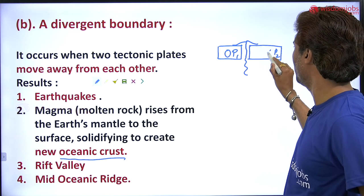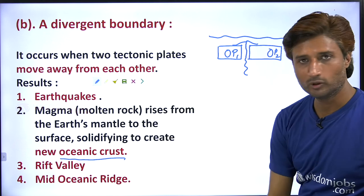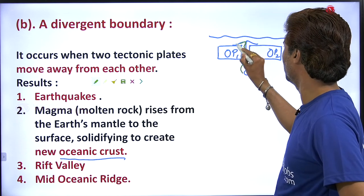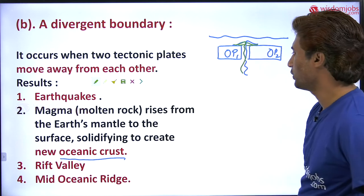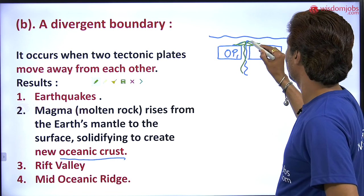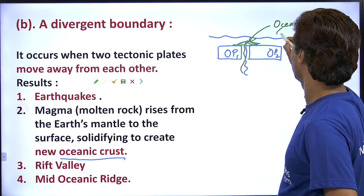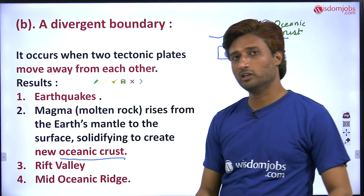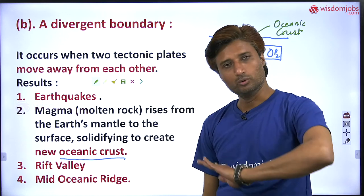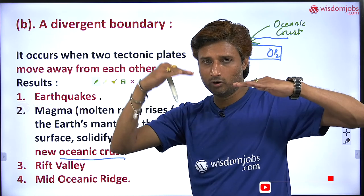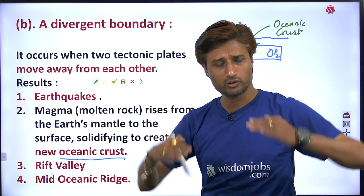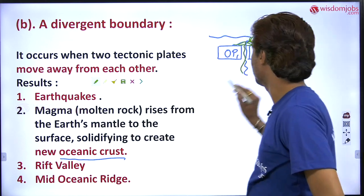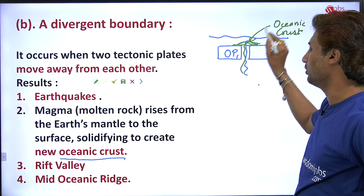That means it is oceanic plate one and oceanic plate two, and here there is ocean. Due to material coming out from the inner part, it is moving in both directions, and new oceanic crust is forming. Here it leads to the formation of new oceanic crust. New landform is being formed by means of a divergent boundary. Due to divergent boundary, if there is a geosyncline present between continent and continent, it leads to mountain formation like Himalaya. Here magma coming out from the mantle to the surface solidifies to create new crust.